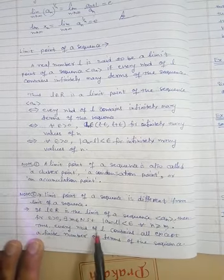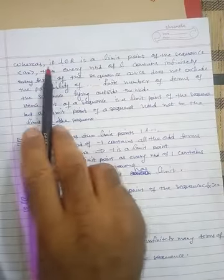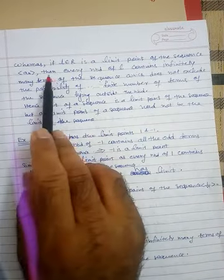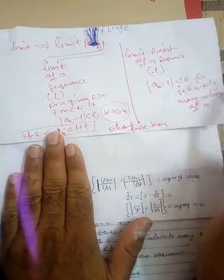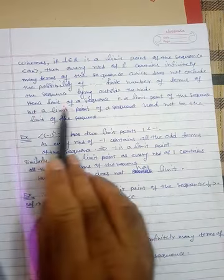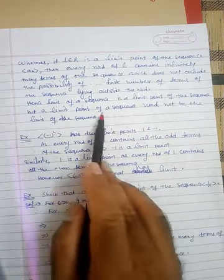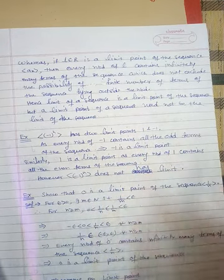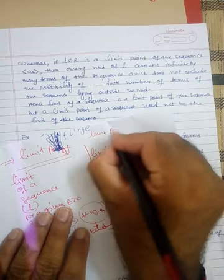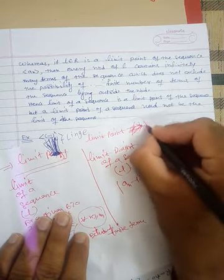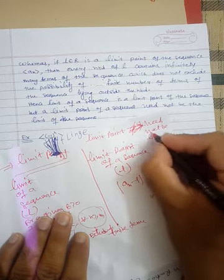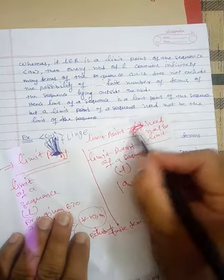Every neighborhood of l contains all except a finite number of terms when l is the limit. Whereas if l is a limit point, every neighborhood contains infinitely many terms, which does not exclude the possibility of finitely many terms outside. Hence limit implies limit point, but a limit point need not be the limit.